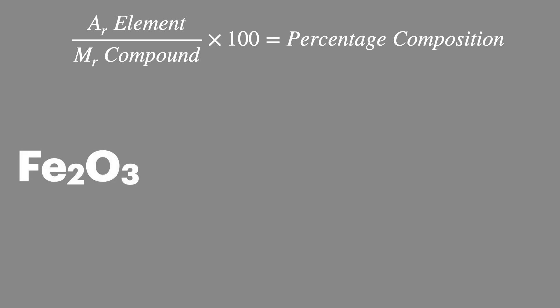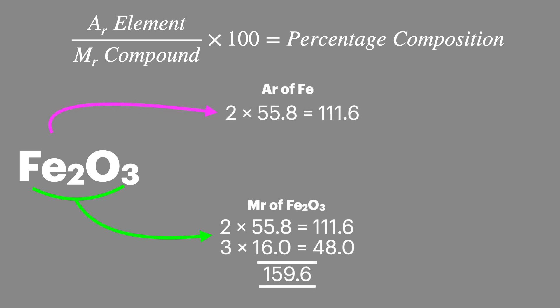For Fe2O3 or iron oxide, we first calculate the total MR. Then we look at the AR for iron. Not forgetting that there's two iron atoms present, so we multiply that by two. Putting the numbers into our equation, we calculate that there's 69.9% of iron in iron oxide.